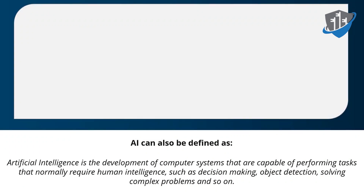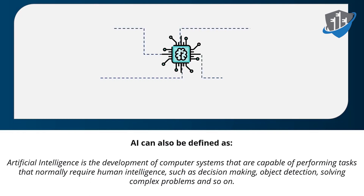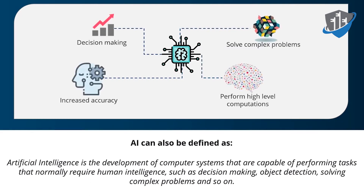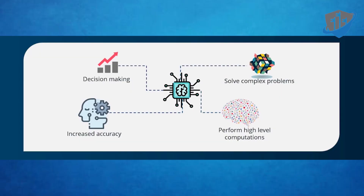Artificial intelligence can also be defined as a wide-ranging branch of computer science that can perform tasks normally requiring human intelligence, like problem solving, decision making, and object detection. AI helps in decision making, complex problem solving, increased accuracy, and performing high-level computation. These are the main features of AI.